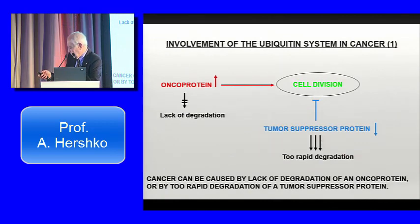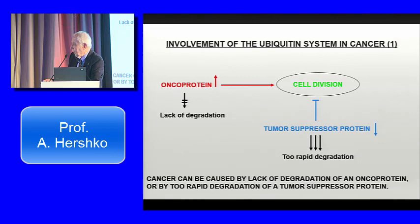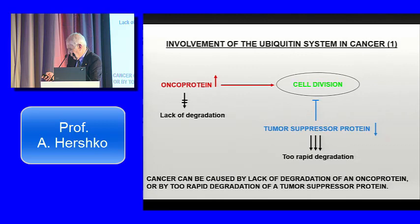In cancer, important molecules are oncoproteins, which stimulate cell division, and tumor suppressor proteins, which have the opposite function of restraining cell division. Normally there is an equilibrium between the action of oncoproteins and tumor suppressor proteins in the control of cell division. In many cancers, there is either an increase in the levels of oncoproteins, or a decrease in the levels of tumor suppressor proteins, or both. What you may not know is that most oncoproteins and tumor suppressor proteins are in a state of turnover — they are continuously synthesized and degraded — and this makes possible deregulation of their levels.